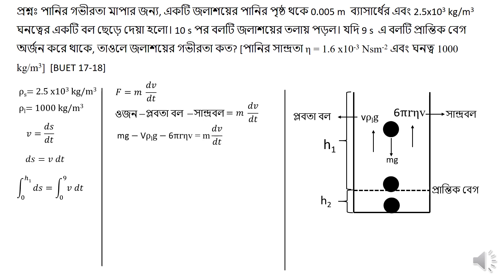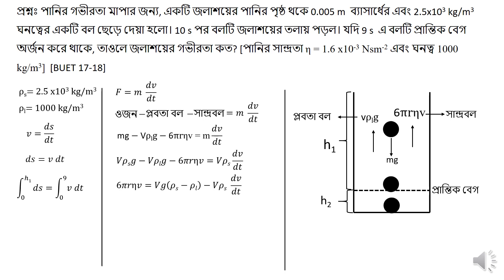We have to write the mathematical formula: m·g minus V·rho_l·g minus 6·pi·r·eta·v equals m·(dv/dt). So the full equation of motion is m·g minus V·rho_l minus 6·pi·r·eta·v minus 6·pi·r, giving the expression in terms of V·rho_s. We write it as Vr minus Vr. The volume V is (4/3)·pi·r³.